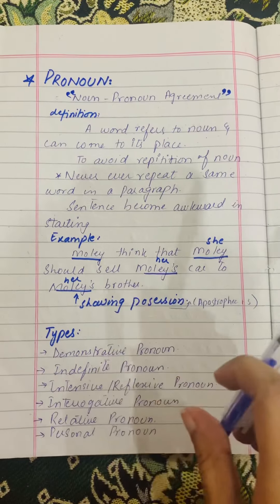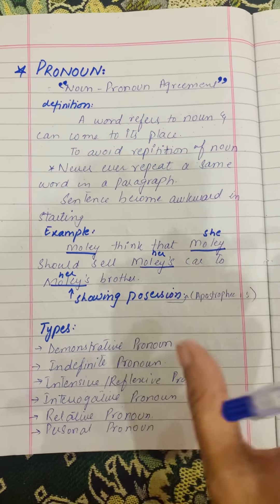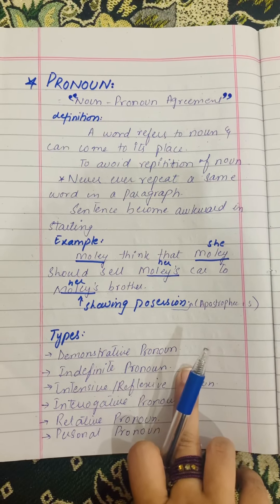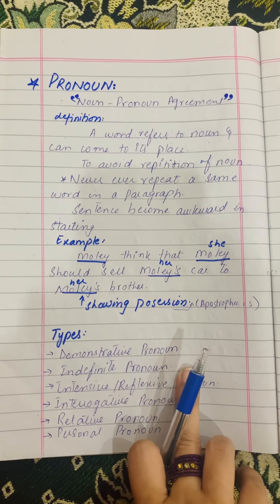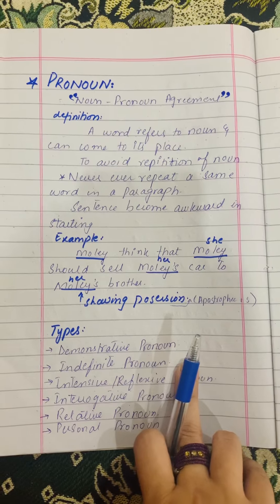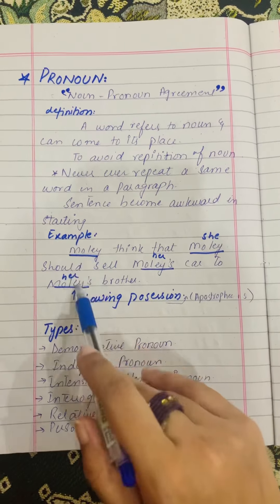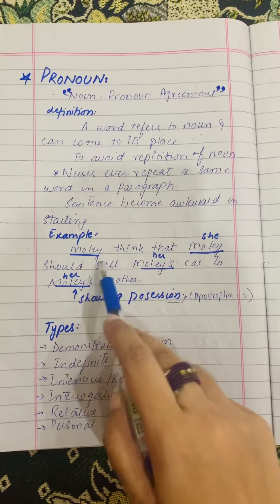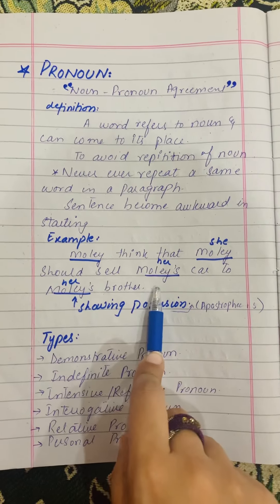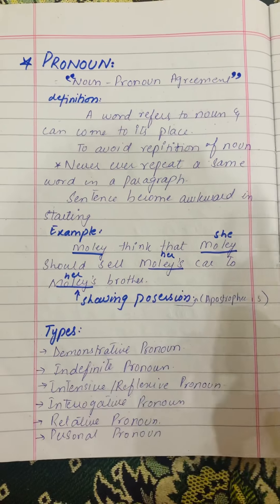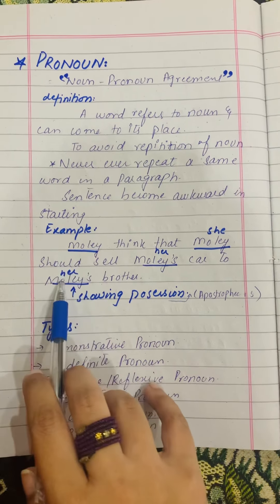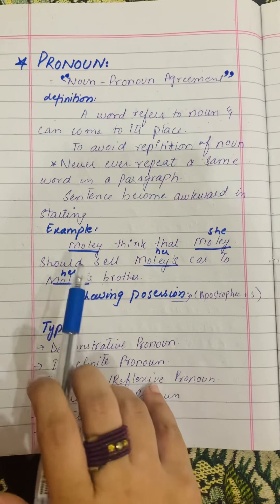Pronouns are such words that come in the place of a noun — they replace the noun and come at its place, making the paragraph, sentence, or essay better in listening or reading. For example: 'Molly is a girl. Molly should sell Molly's car to Molly's brother.' This is correct but too awkward. So we change the word 'Molly' into a pronoun — a pronoun replaces 'Molly.'